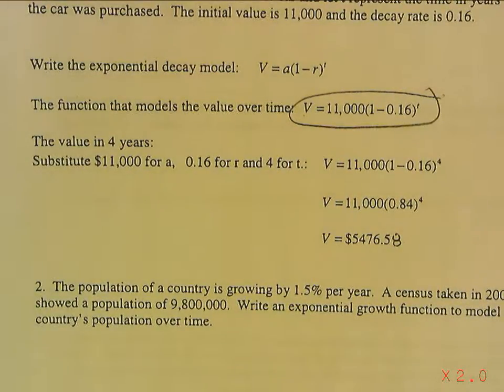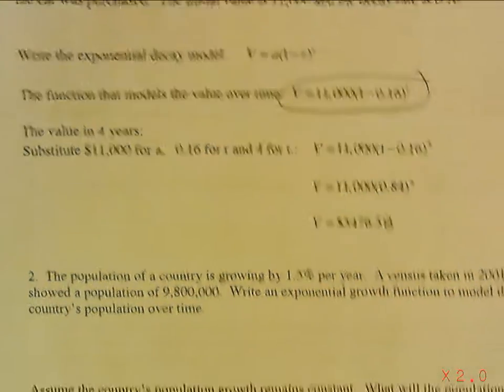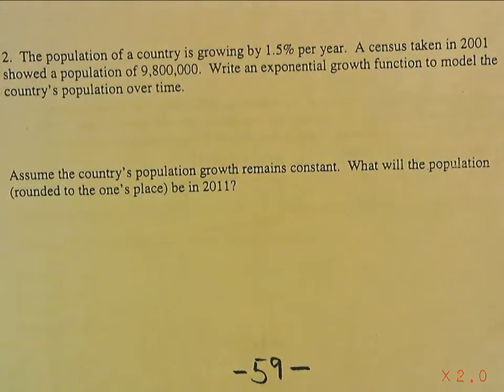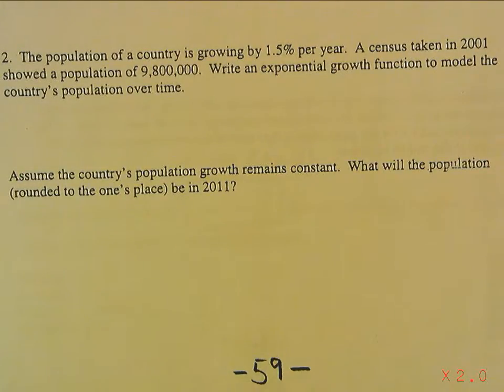So, let's look at number two. Number two says, the population of a country is growing by 1.5% per year. A census taken in 2001 showed a population of 9,800,000. Write an exponential growth function to model the country's population over time.